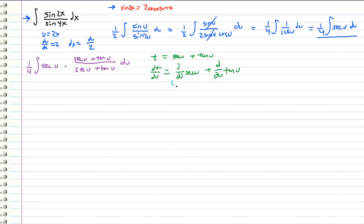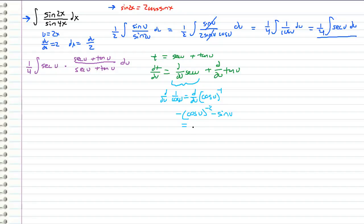Let's evaluate both parts separately. First, d/du of secant u. This is really just d/du of 1 over cosine u, which I'll rewrite as cosine u to the negative 1 power. Now we can use the power rule: multiply by negative 1, drop the power, and multiply by the derivative of the inside by the chain rule, giving a negative sine u. This comes out to be sine u over cosine squared u, or in other words, secant u times tangent u.